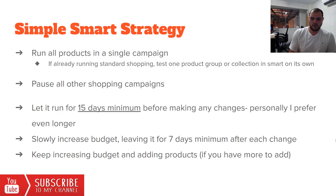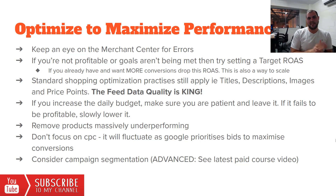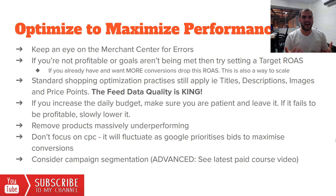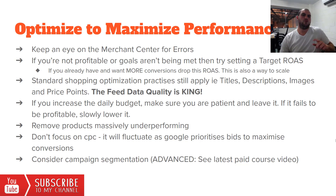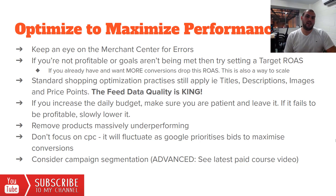To optimize your campaigns and maximize performance: check your Merchant Center regularly for any feed issues — these pop up all the time especially when adding lots of products. If you're not profitable or goals aren't being met, you can try setting a target ROAS. If you want more conversions in volume, drop the ROAS percentage; if you want to be more profitable, increase it. Standard shopping optimization practices still apply: titles, descriptions, images, price points. Feed data quality is king here — we're using AI, so make sure you improve all those things.